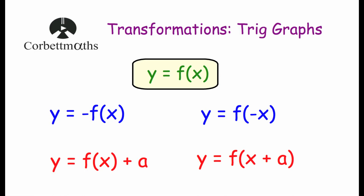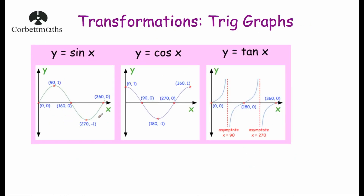Let's have a quick recap of the trig graphs: y = sin x, y = cos x, and y = tan x — all in degrees at GCSE level. For y = sin x, sketched between 0 and 360 degrees: it starts at the origin, goes up to (90°, 1), down to (180°, 0), down to (270°, -1), and back up to (360°, 0). It carries on, and we could also draw it for negative values of x.